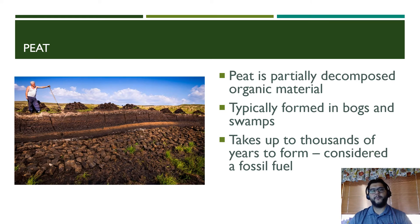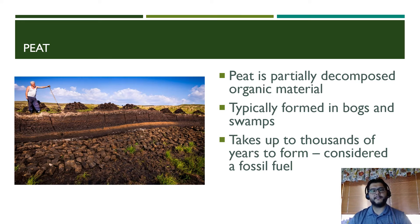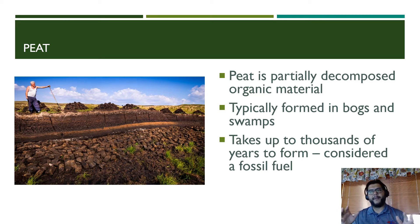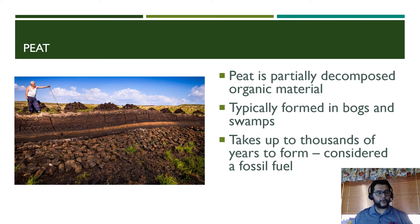As you go from wood, you eventually get to peat. Peat is organic material that's partially decomposed, and you typically see it in what are called bogs and swamps. Peat takes thousands of years to form — it's technically considered a fossil fuel — but it can be unearthed pretty easily and it's a little bit more efficient than using wood fuel.